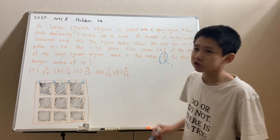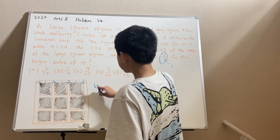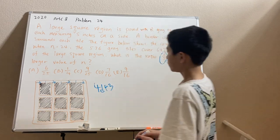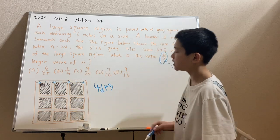And the side of the large square would then be 4d plus 3. Right? 1, 2, 3, 4 d's, and 3.